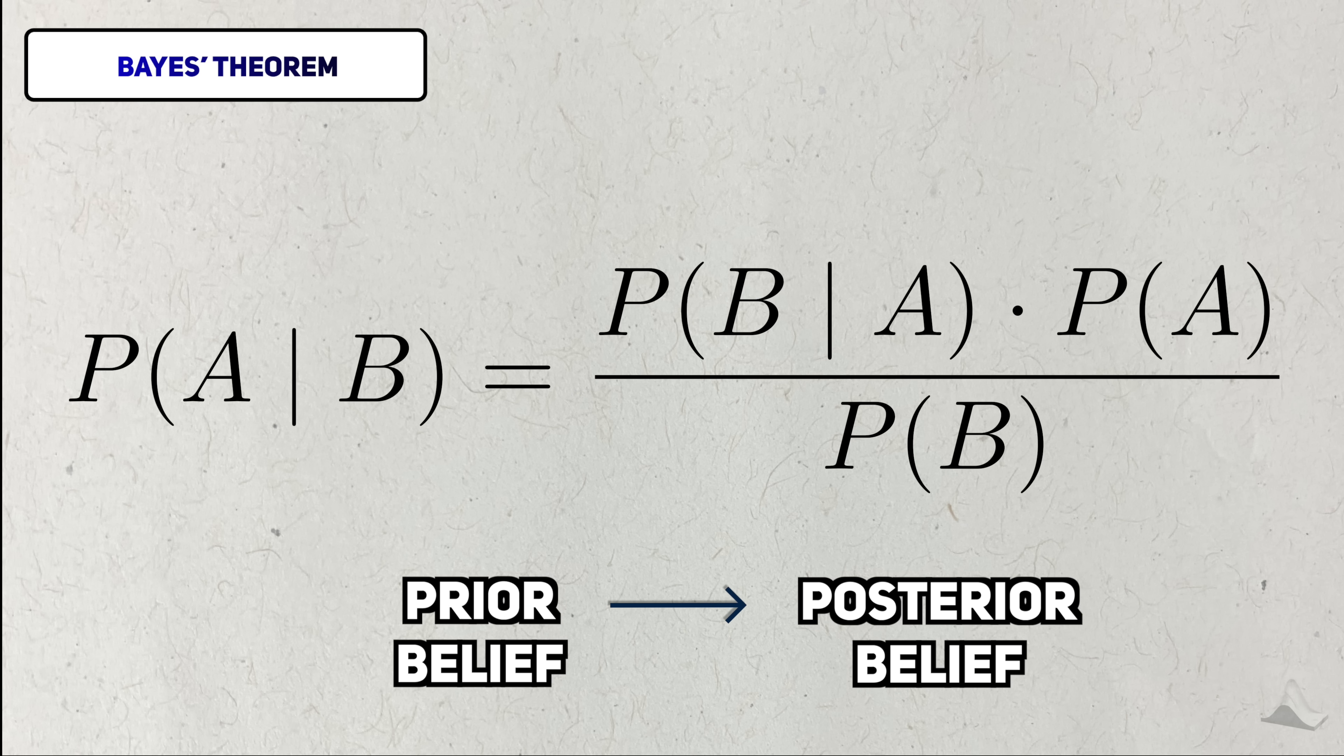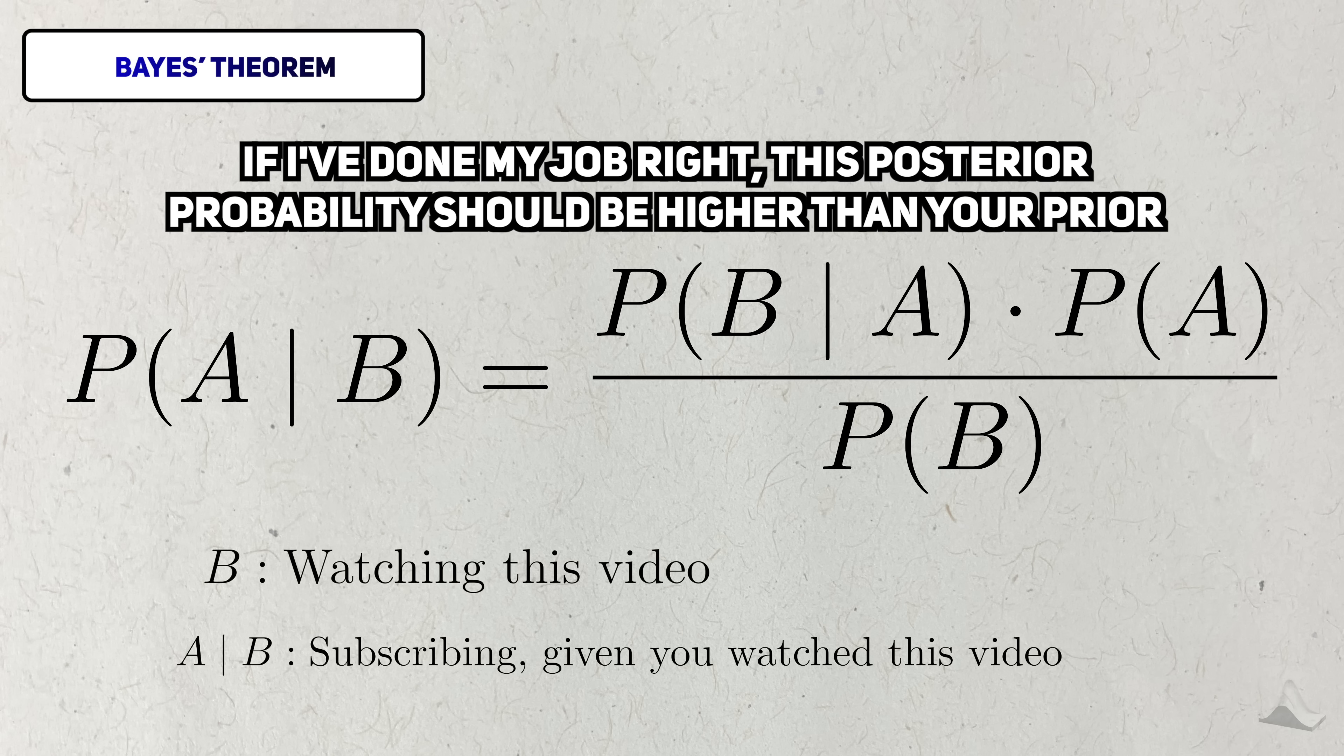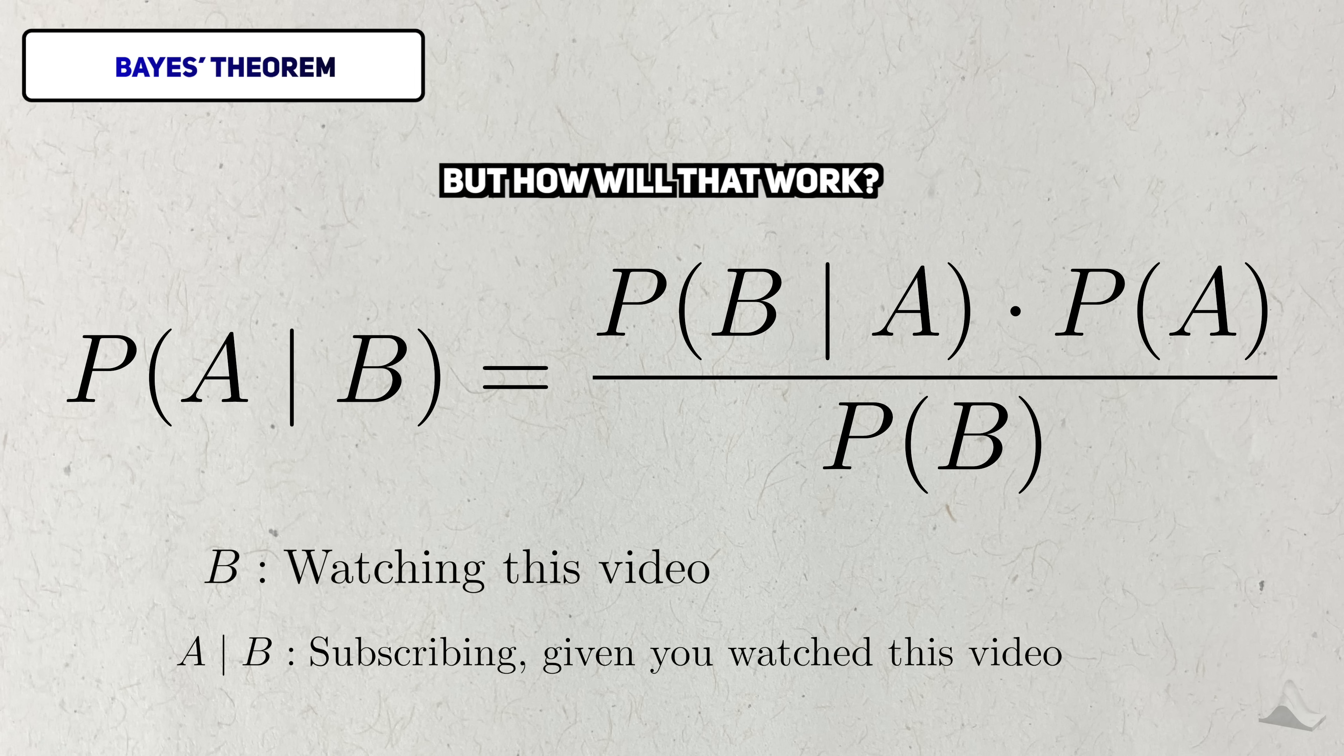So we're going from our prior belief that the event will happen to this posterior belief. Given that some other event B happened, Bayes' theorem tells us how to update our degree of belief that this A event will happen. If the B event was watching this video, then this posterior probability would be the probability you subscribe given that you watched this video. If I've done my job right, hopefully this probability is higher than before you watched it.